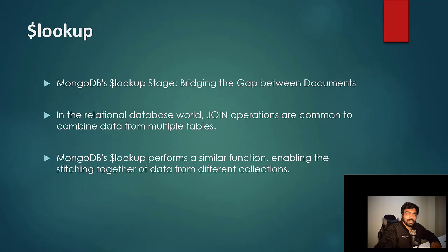Now let's take a look at one of the interesting stages in the aggregation pipeline called lookup. Lookup is used to bridge the gap between documents of your various collections — it's the same as joins in the relational database world. Lookup aggregates different collection data into your result set. Although in the MongoDB world you would have embedded documents when relating data from different collections, there are use cases where you want to keep data in separate collections but query them together, and in that case you can use the aggregation pipeline with lookup.